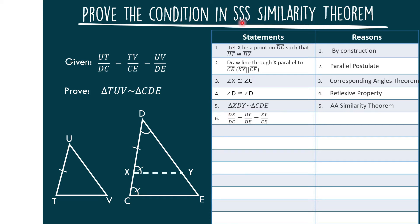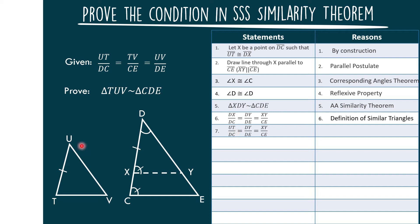Since we are dealing with a side-side-side proof, statement number 6 gives us: DX over DC is equal to DY over DE, and equal to XY over CE, by definition of similar triangles. Statement number 7: UT over DC is equal to DY over DE, and equal to XY over CE — this is by substitution, since in statement number 1 we established that DX equals BX, which equals UT.